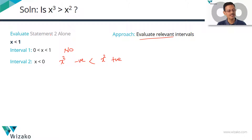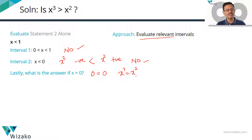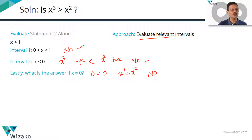Don't miss the border value: what happens when X equals 0? X cubed equals 0 and X squared equals 0, so X cubed equals X squared — X cubed is not greater than X squared — answer is NO. So for Statement 2, across all sub-intervals — (0,1), x < 0, and x = 0 — we get a uniform NO. Statement 2 alone is sufficient. Since Statement 1 was not sufficient but Statement 2 is, the correct answer is choice B.